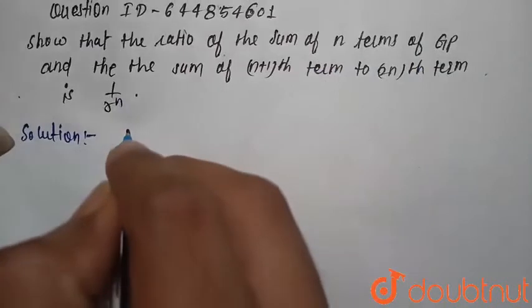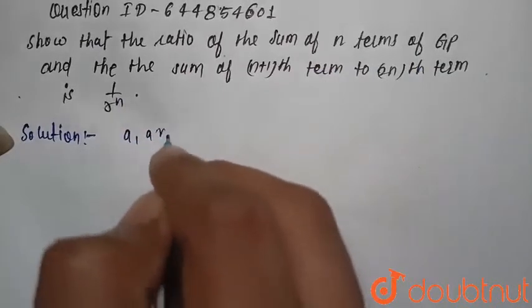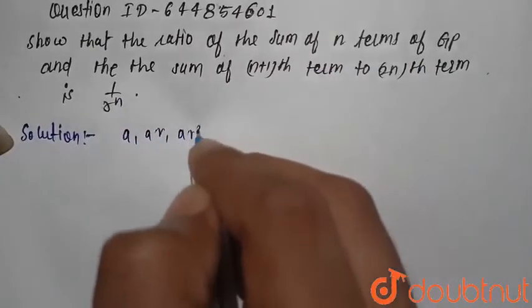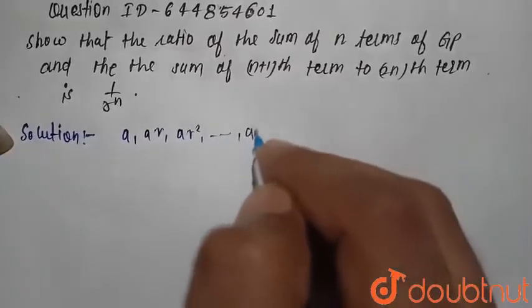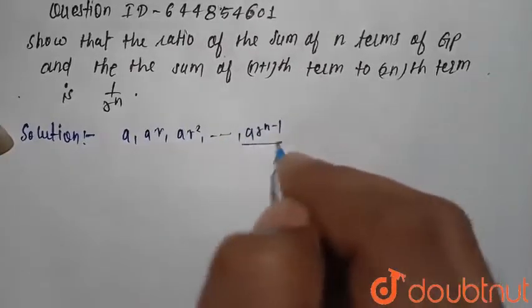So first we consider a GP: a, ar, ar square, and till ar to the power n minus 1. This is n term.